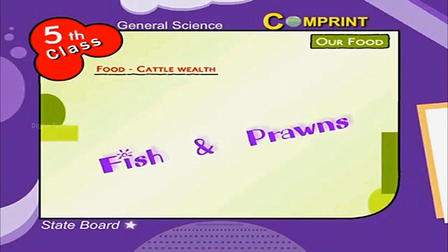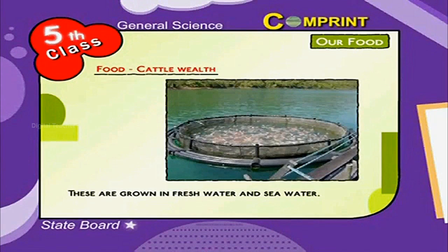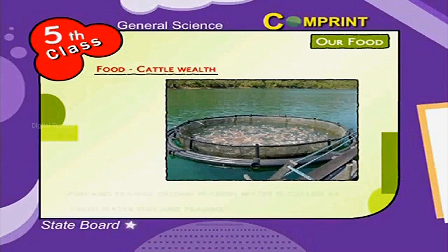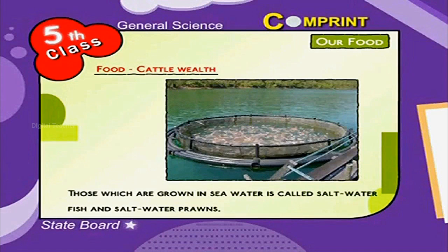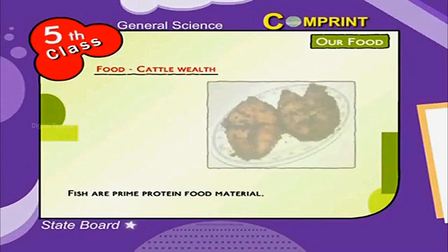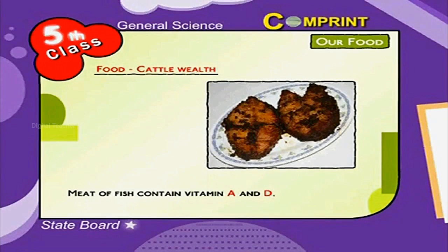Fish and prawns are grown in fresh water and sea water. Fish and prawns grown in fresh water are called freshwater fish and prawns, while those grown in sea water are called saltwater fish and saltwater prawns. Fish are a prime protein food material, and the meat of fish contains Vitamin A and D.